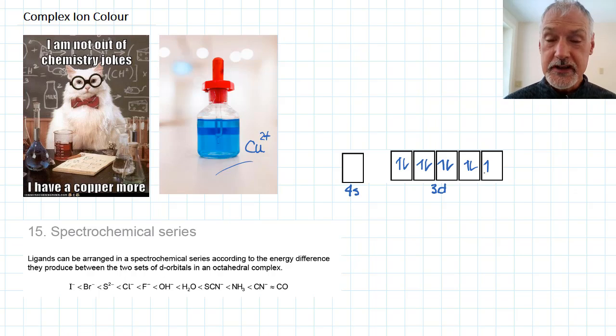This is one of the first criteria that's required to create a colored solution: partially filled d orbitals.